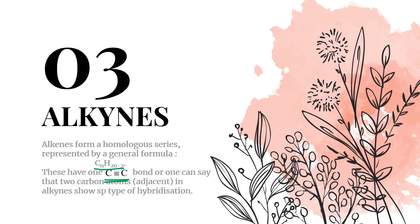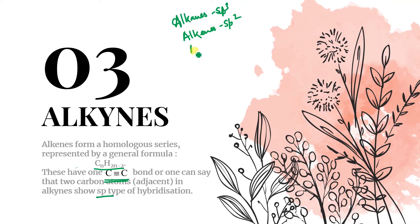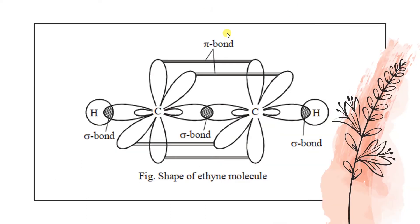In alkynes, two adjacent carbon atoms show sp-type hybridization. So to compare: alkanes are sp3 hybridized, alkenes are sp2 hybridized, and alkynes are sp hybridized. The bond formation involves two pi bonds and one sigma bond.